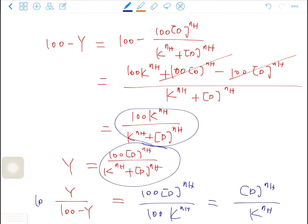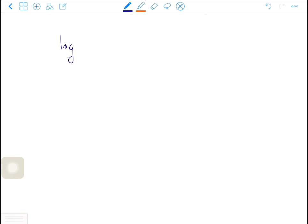You take the log of this value, so you have log y over 100 minus y equals log d^nH minus log k^nH equals nH log d minus nH log k. So this is how you get the Hill equation.